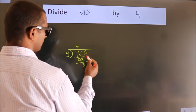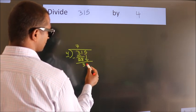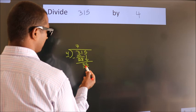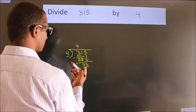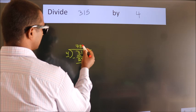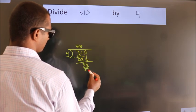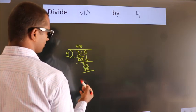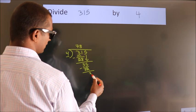After this, bring down the beside number. So 5 down, giving us 35. A number close to 35 in the 4 table is 4 times 8 equals 32. Now we subtract. We get 3.